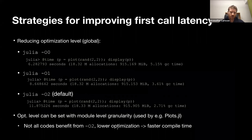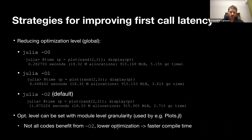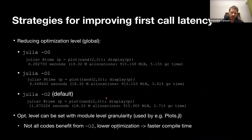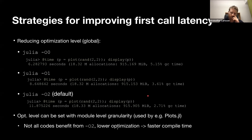After Julia 1.5, you can also set the optimization level on specific modules. If a package takes a long time to compile but doesn't gain much advantage from high optimization — like Plots, where running super-optimized passes doesn't help runtime very much — it might be worth running with a lower optimization on that module. You have to weigh latency versus runtime; for a hardcore numerical simulation, you probably don't want O0 because the optimization pays for itself.